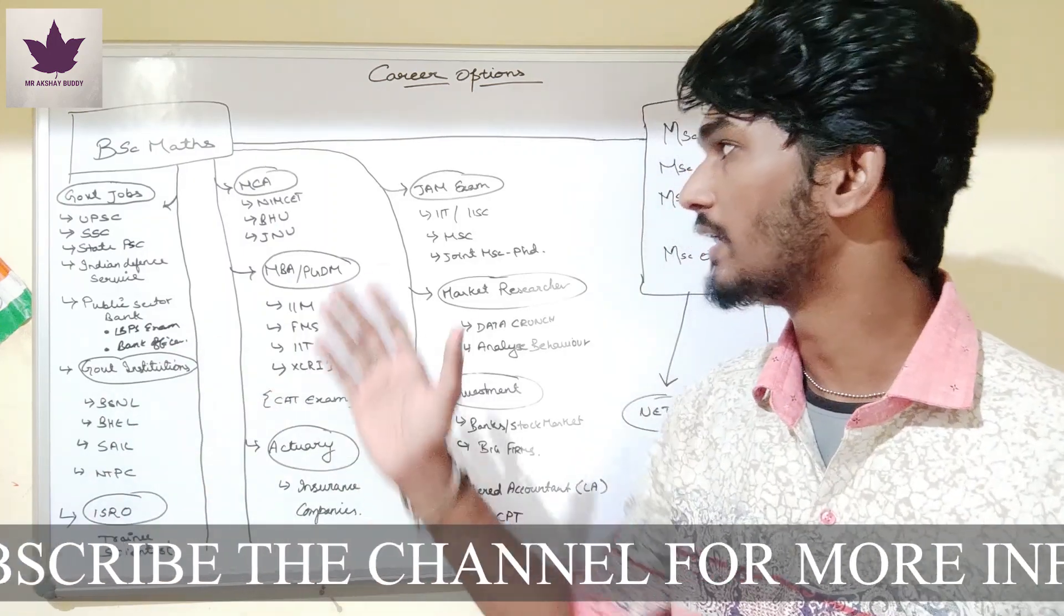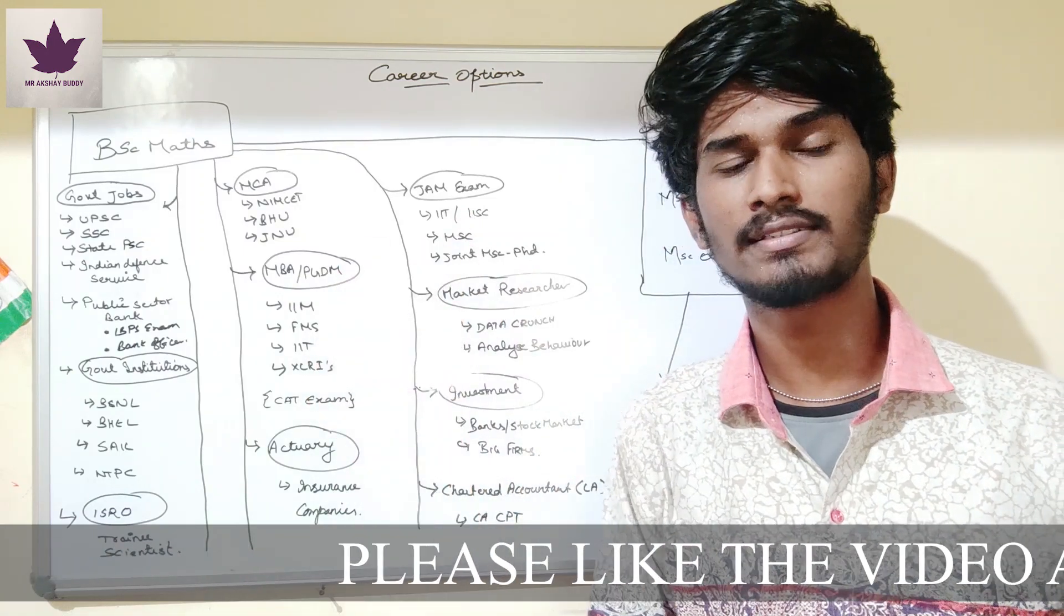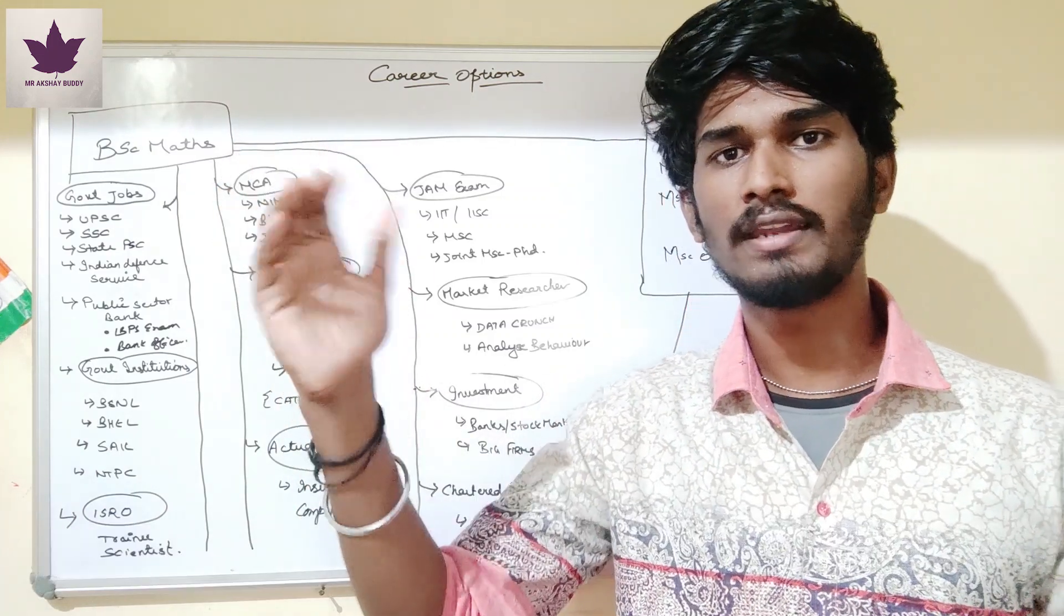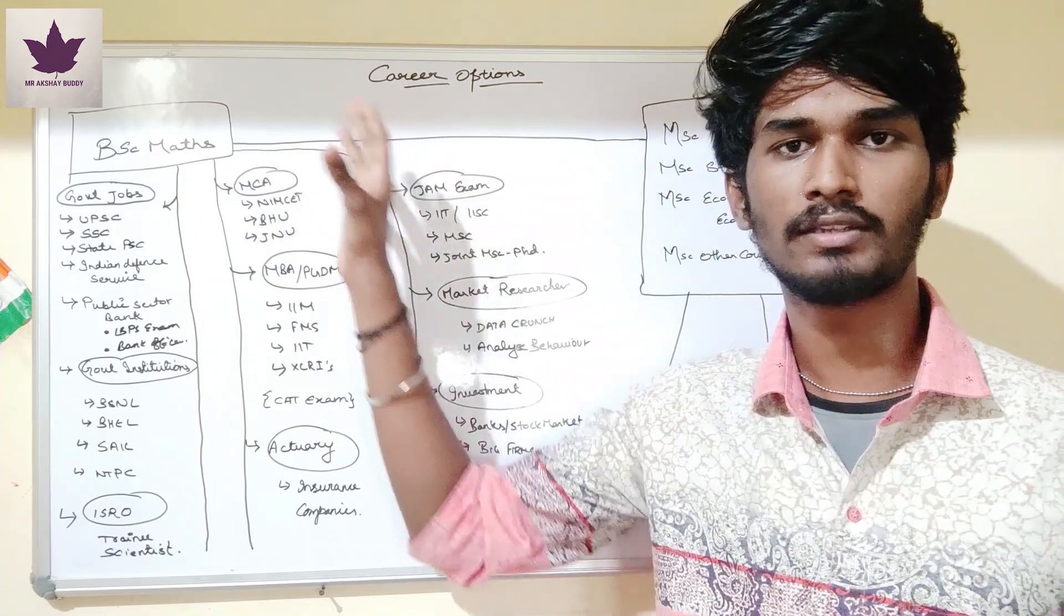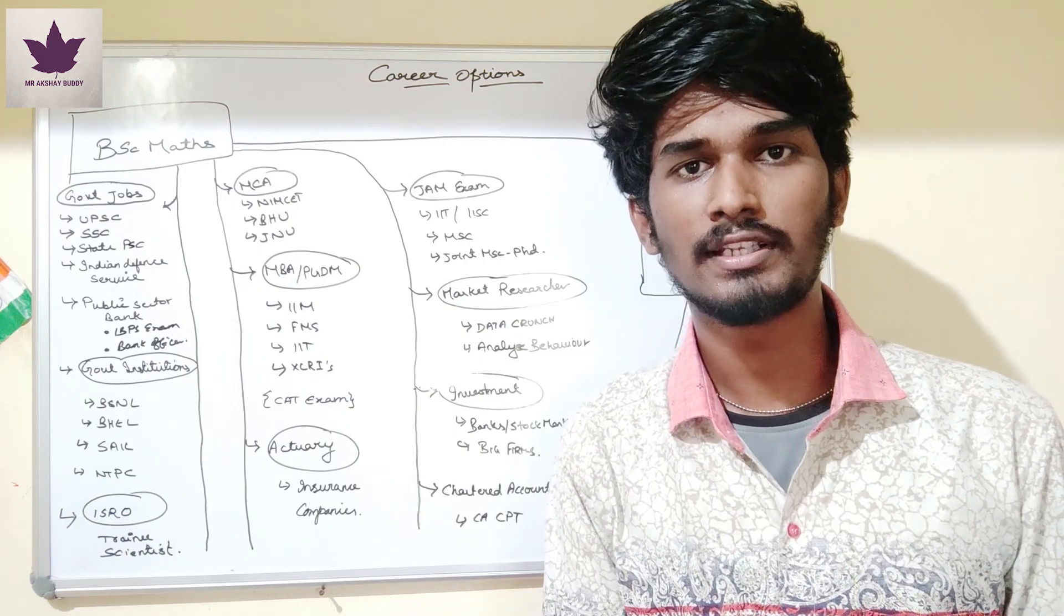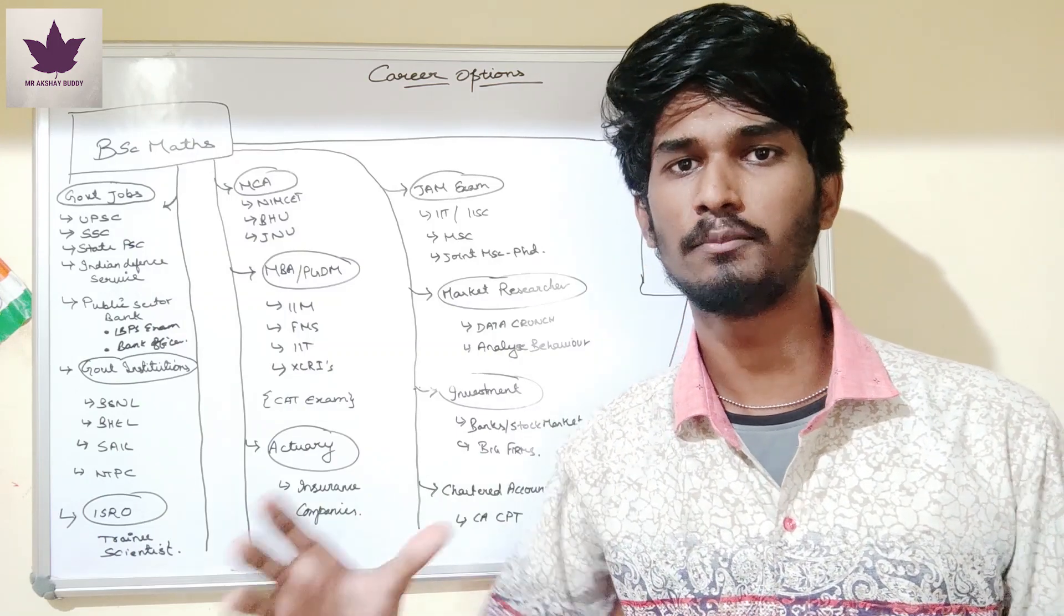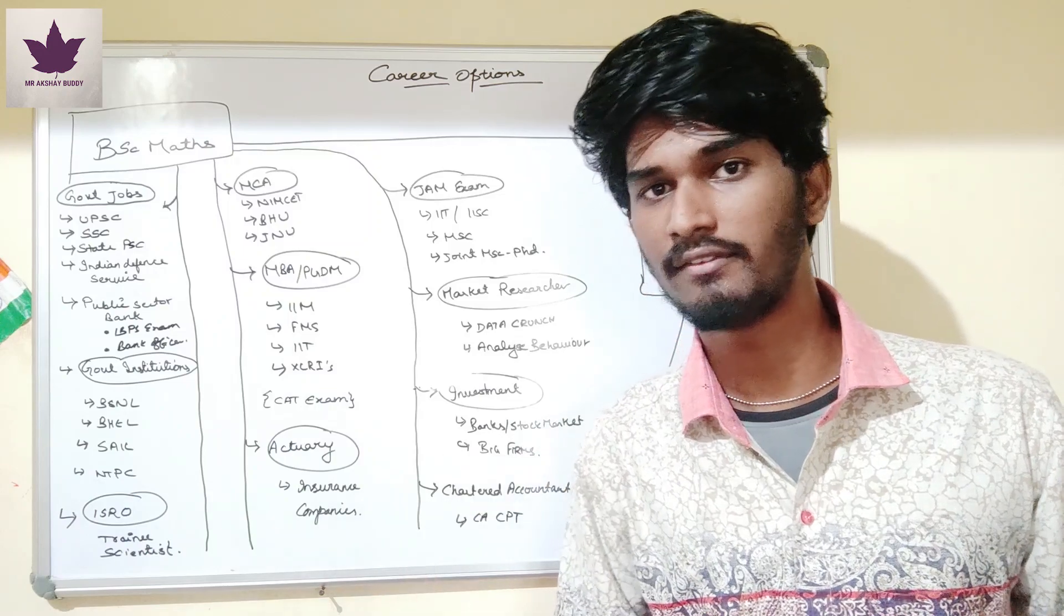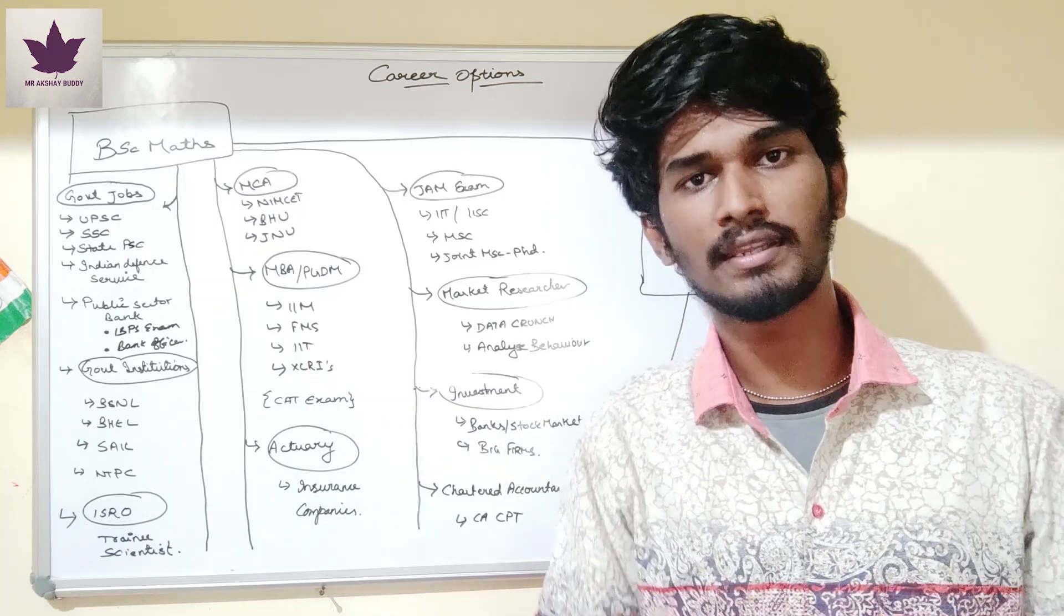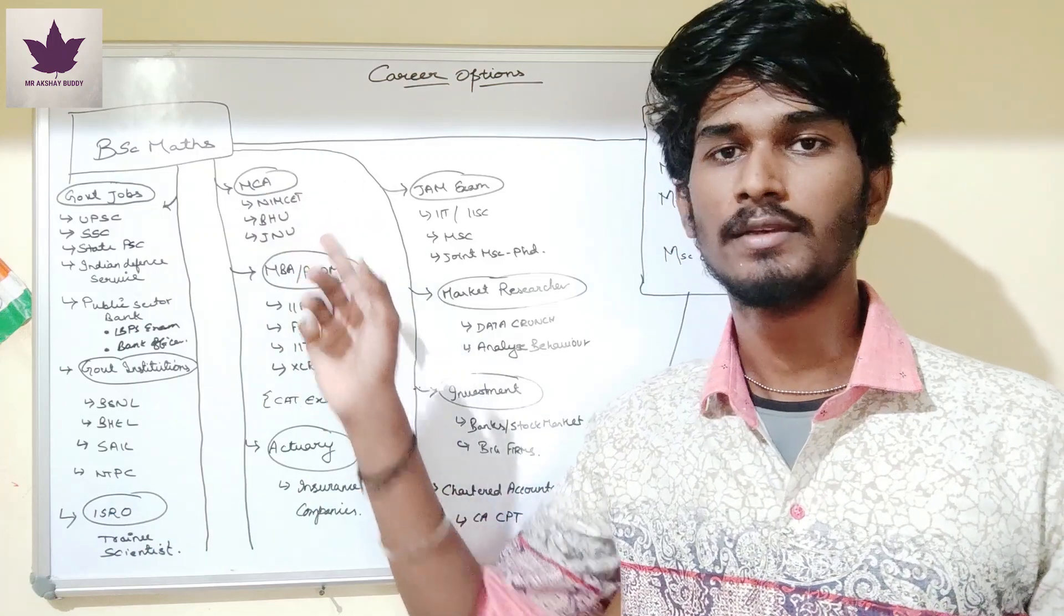You can do MCA. After B.Sc. and MCA, you can work in software companies as coding students. This is a good option. But first of all, you need to complete B.Sc. with Computer Science. The competition will increase, but you can enter the software field.